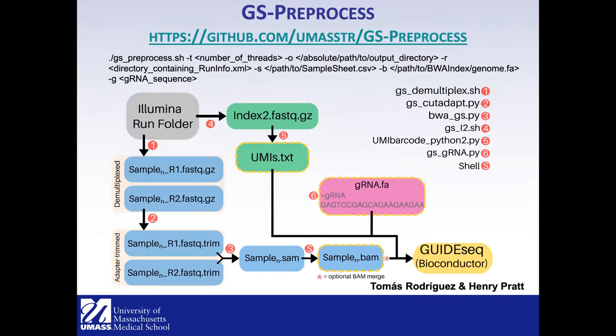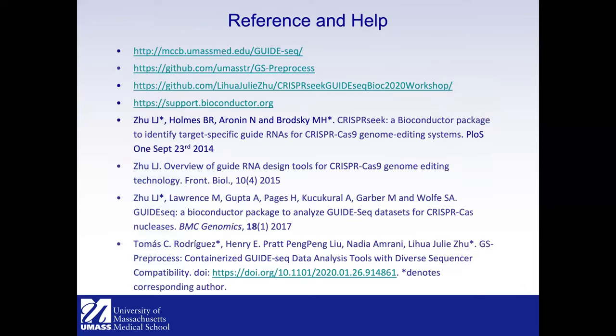To make preprocessing even easier, if you have a BCL file you can run one line of code using the GUIDEseq preprocessor GitHub package developed by two students, Tom and Henry. This one line generates all necessary files for GUIDEseq analysis. References, preprocessing GitHub scripts, and workshop materials are available. Feel free to post questions on the Bioconductor support site using CRISPRseek or GUIDEseq as the tag.